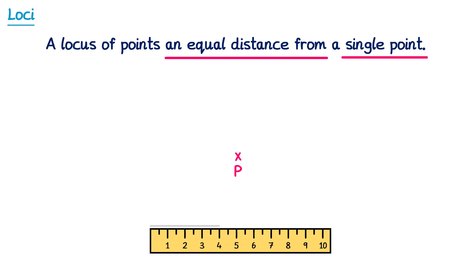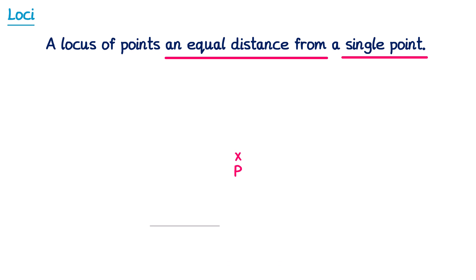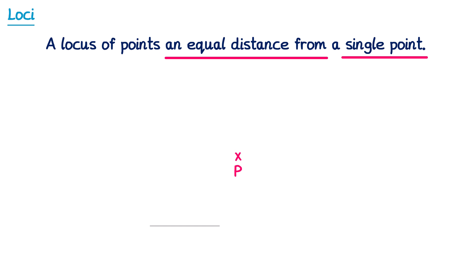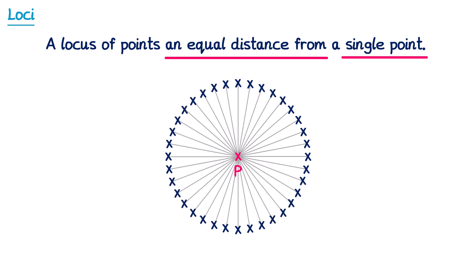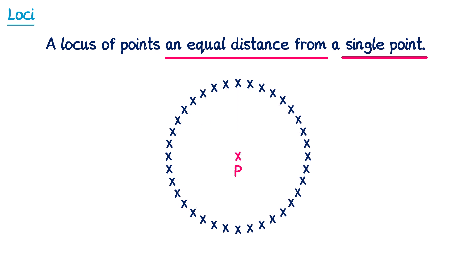If we draw a 4cm line, we're looking for any point that's this far away from the single point. If we put this line onto the point P, then this point is 4cm away. We want to mark any other points that are also 4cm away — this one, this one, this one, this one, and in fact any of these points around it.